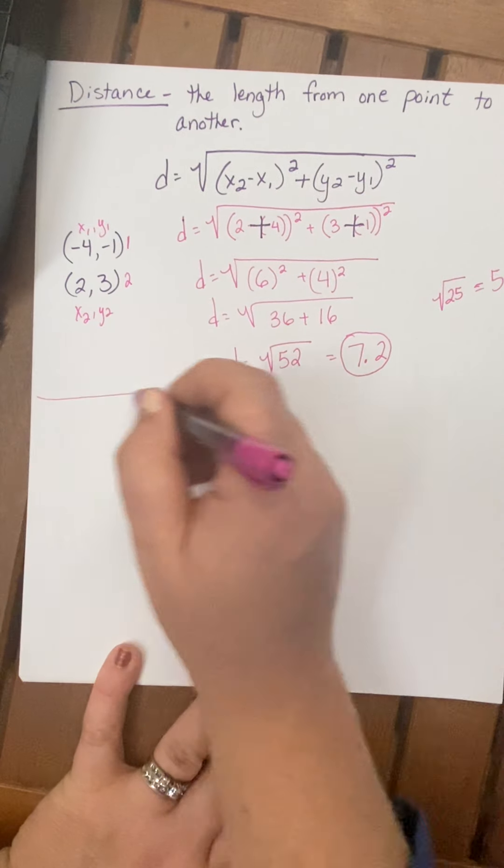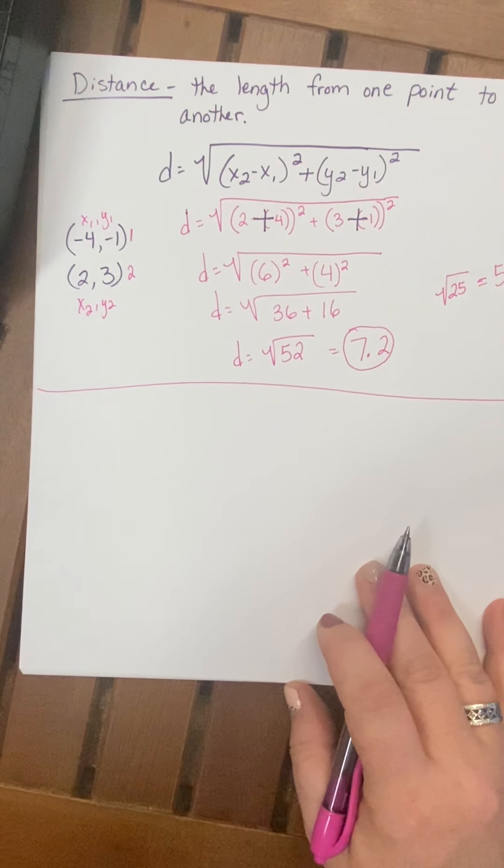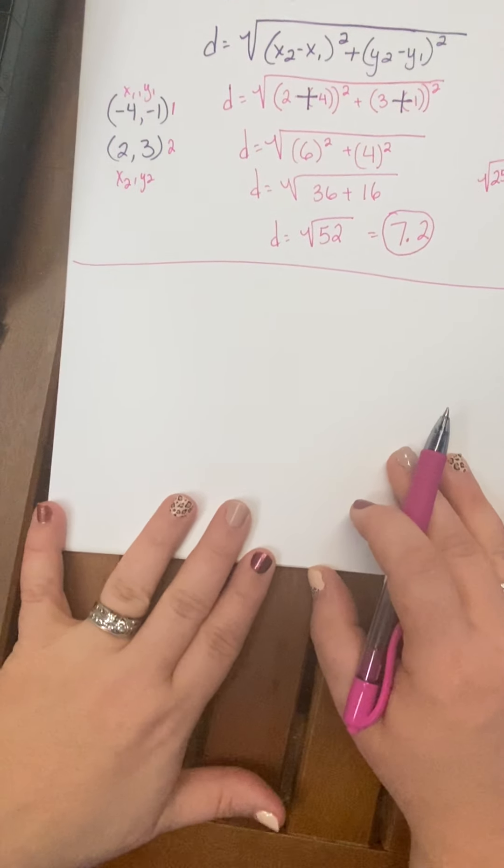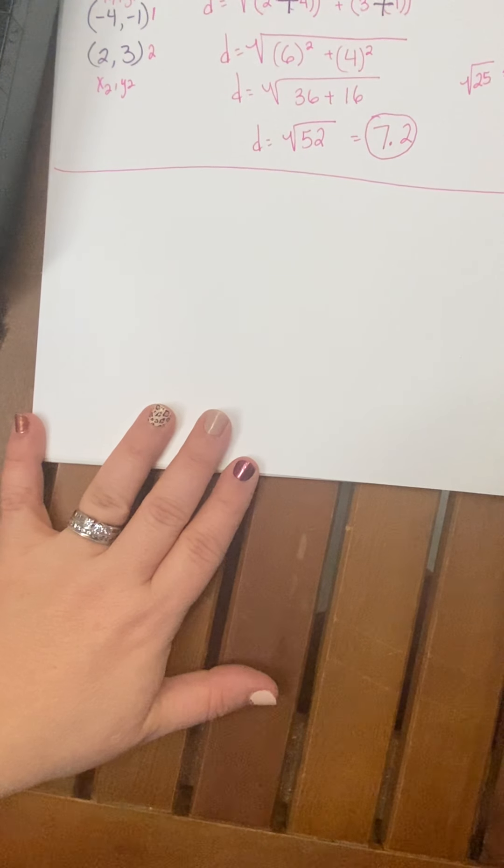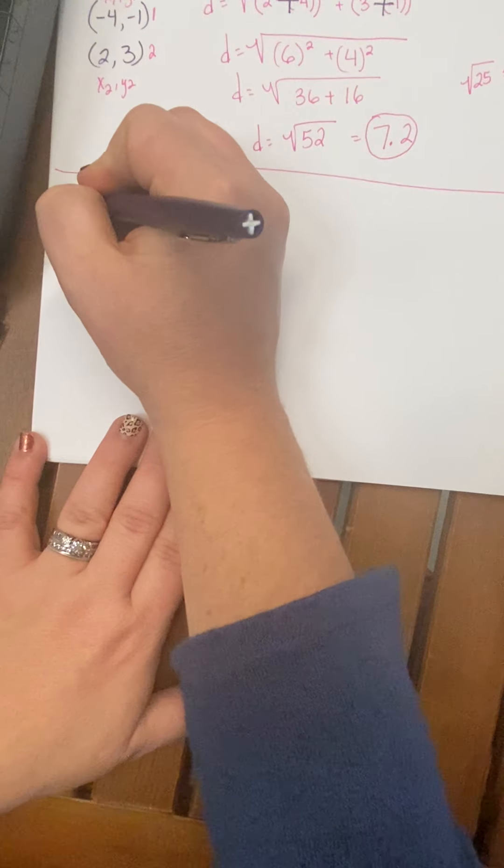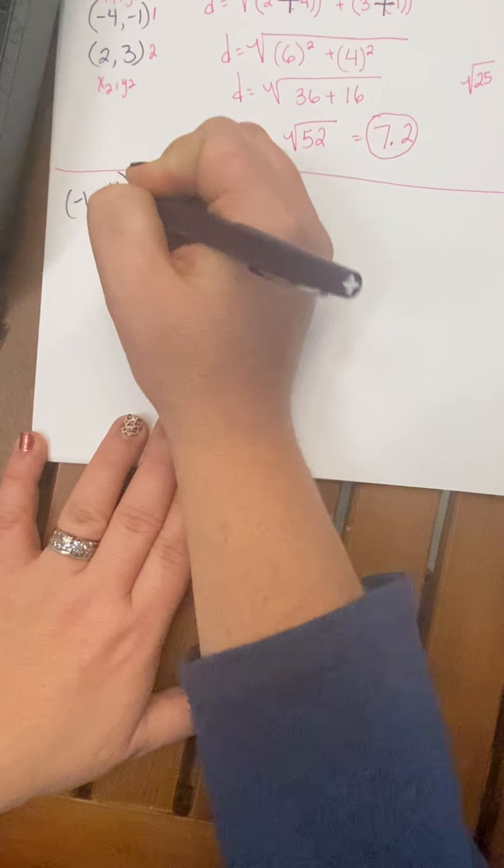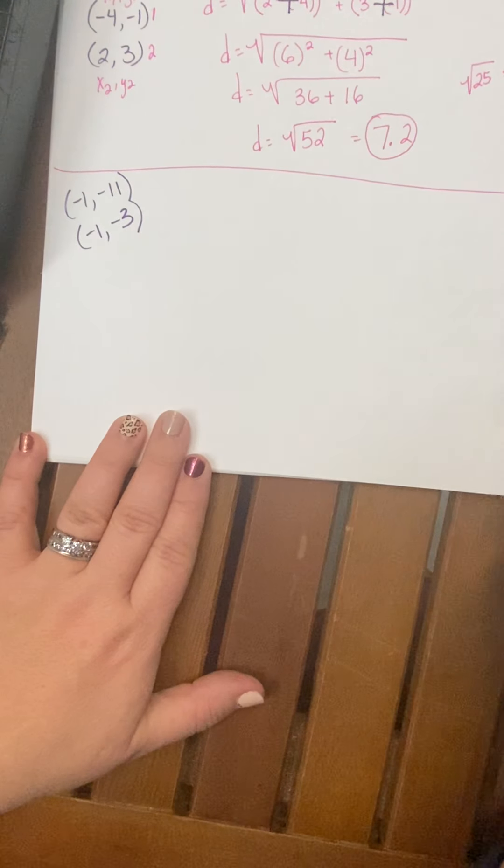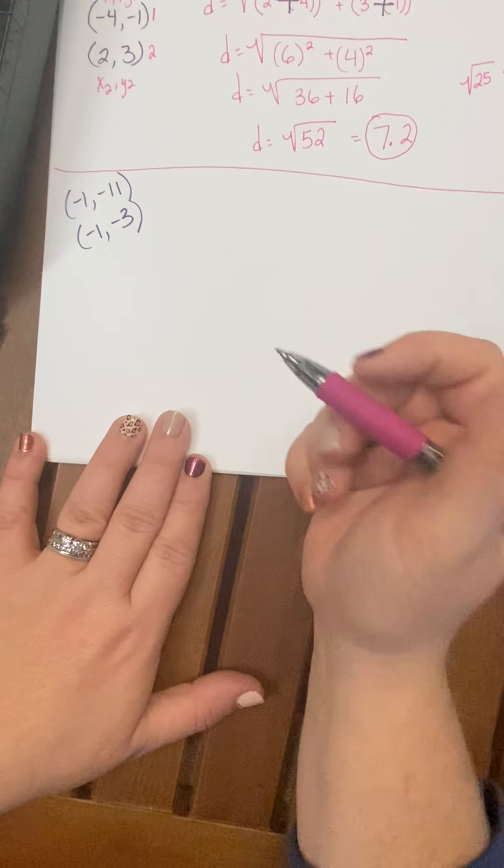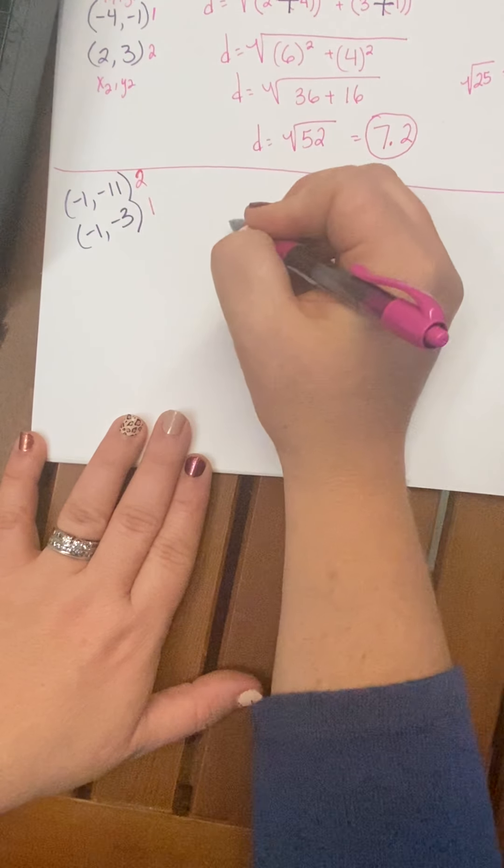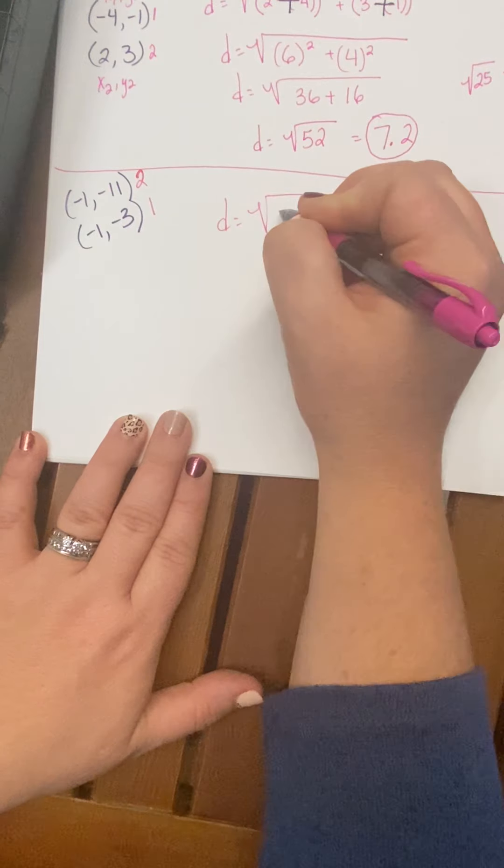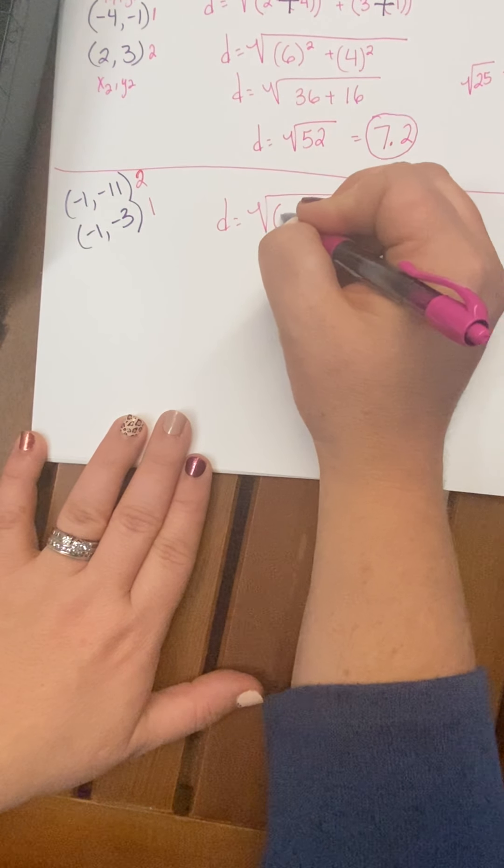All right, let's do another one just so that you have a second example. Let's do this one. This one will come out a little bit more even. Let's do negative 1, negative 11, and negative 1, negative 3. And just for the fun of it, going to call this one 2 and this one 1, because it really doesn't matter which way we put them into the formula. They're going to come out to be the same answer.